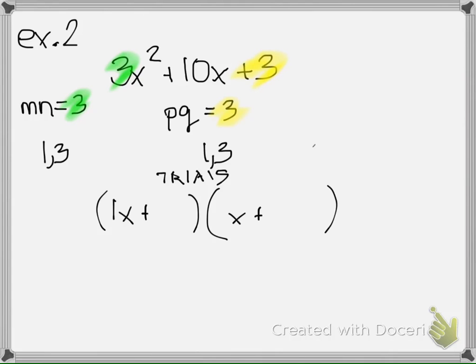Now I need to do my trials. So I have a 1x and a 3x here and a 1 and a 3 here. And my only other situation would be my 1x and my 3 over here and my 3x and my 1 over here.